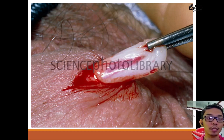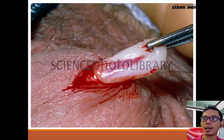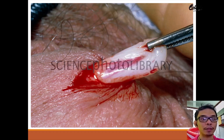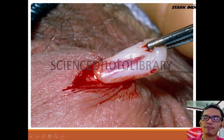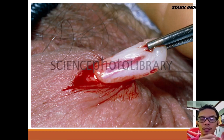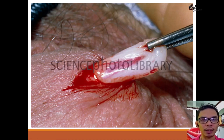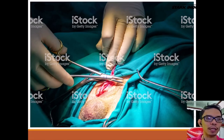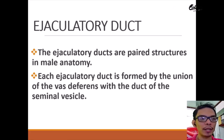This photo was taken during a vasectomy. The vas deferens is made up of white tissue. Vasectomy is an important male birth control method — the vas deferens is cut into two, the two tubes are separated, and then stitched with surgical thread. That is the vasectomy procedure.